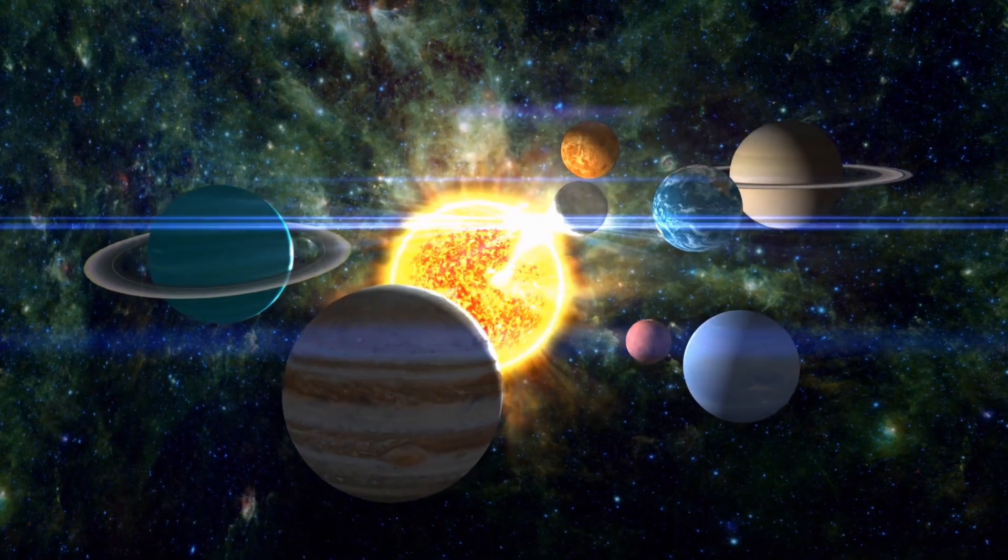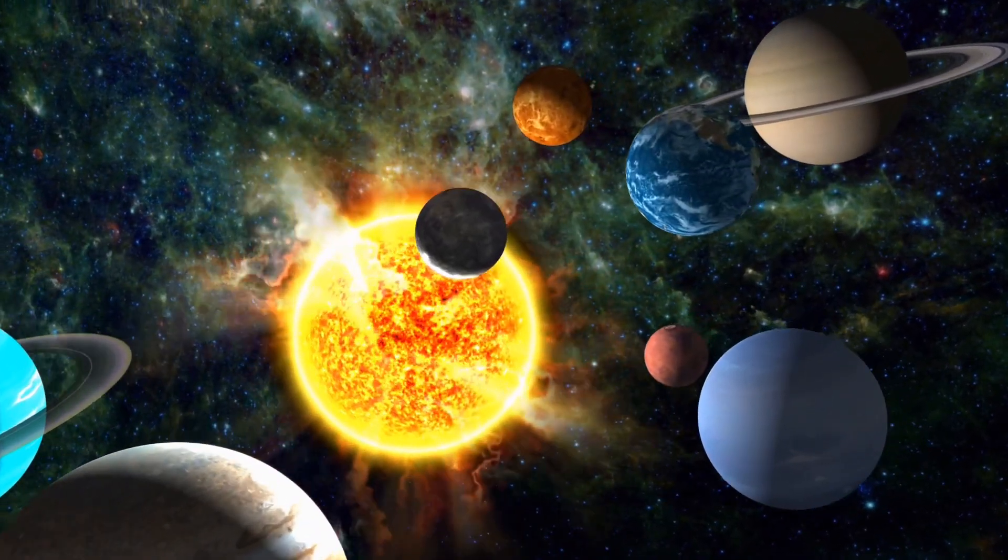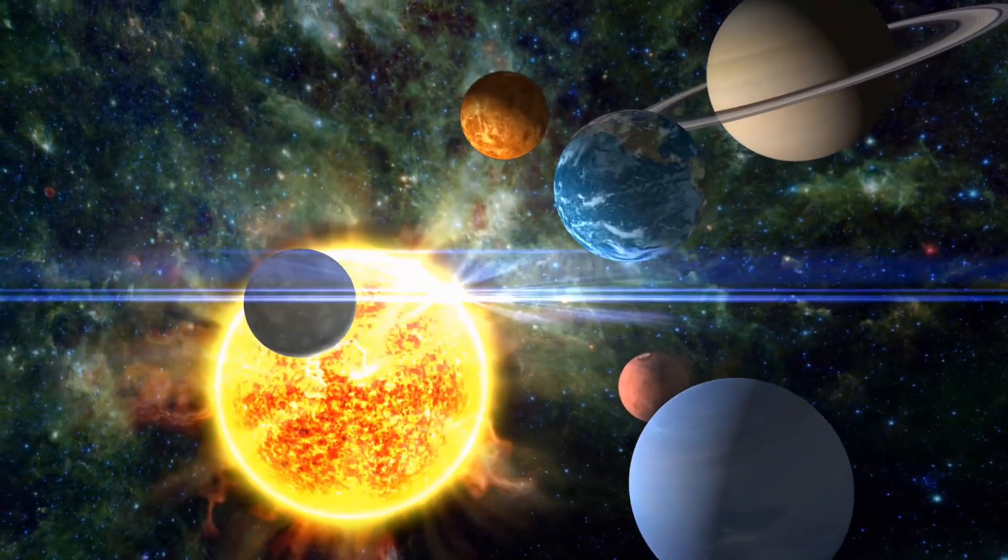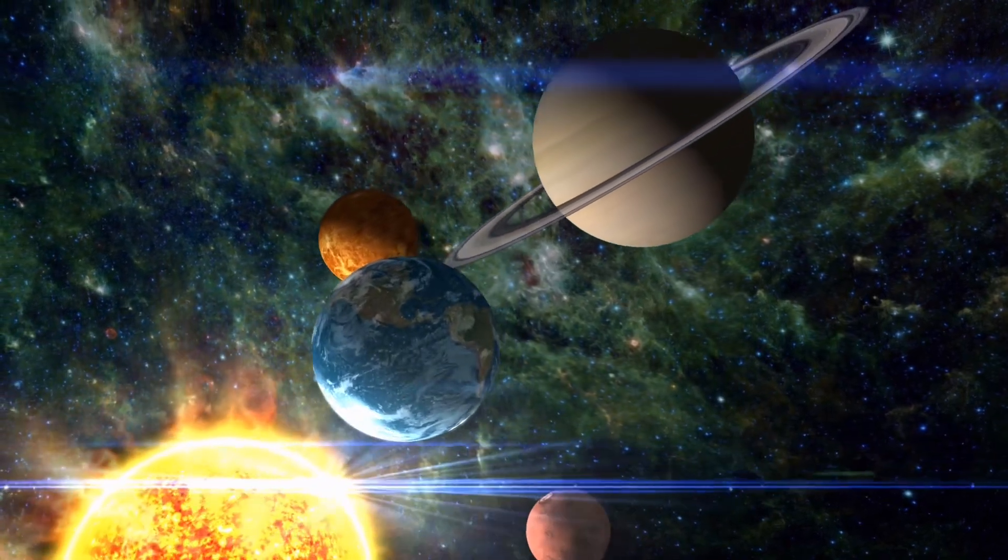In our solar system we have eight planets including Mercury, Venus, Earth, Mars, Jupiter, Saturn, Uranus, and Neptune, and a dwarf planet called Pluto.